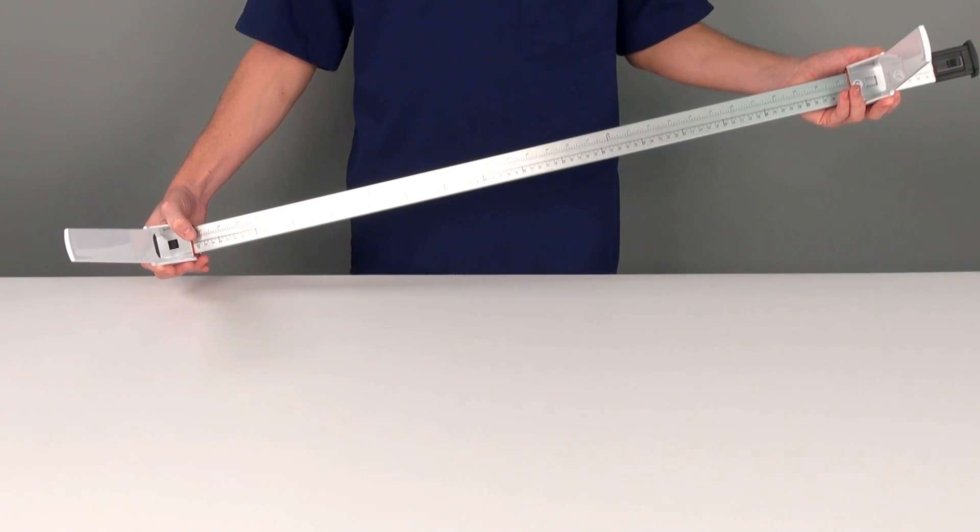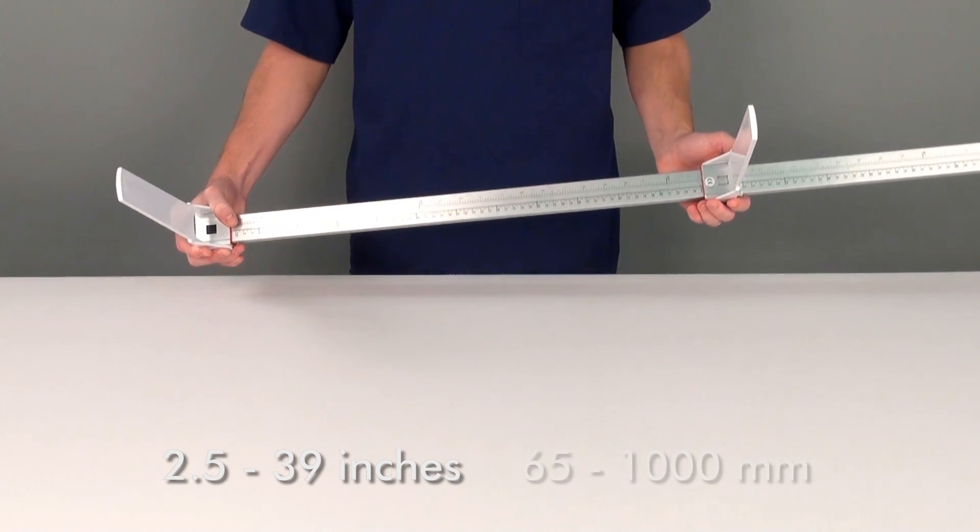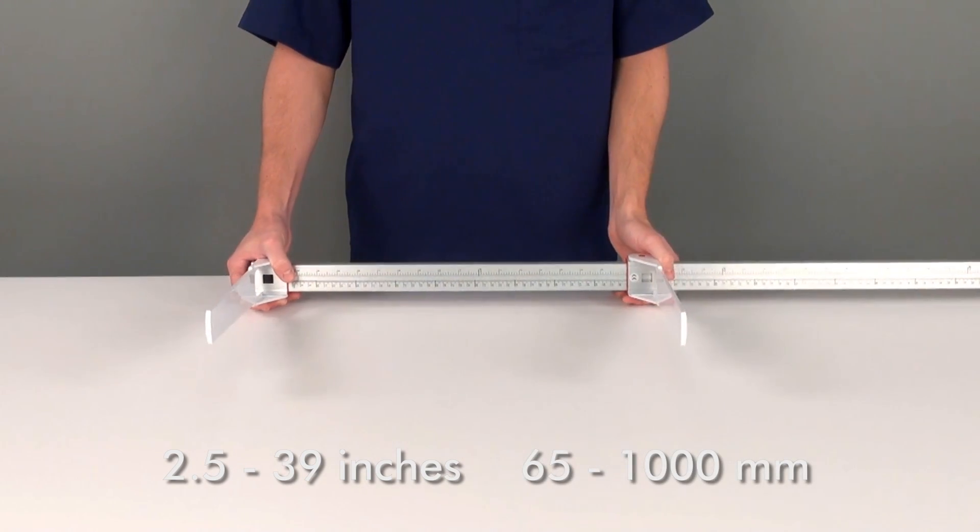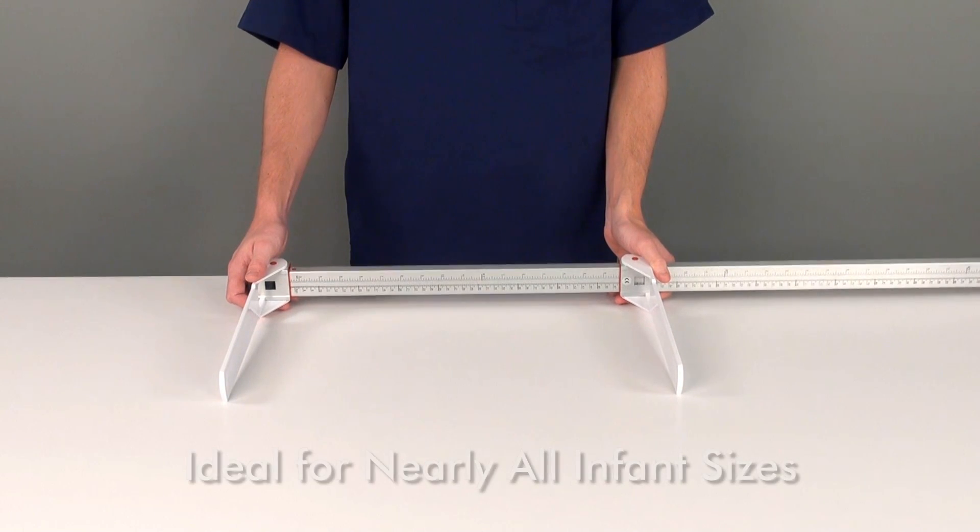The MLM is capable of measuring between 2.5 and 39 inches and 65 to 1000 millimeters with graduation increments of one-eighth inch or one millimeter, which makes it ideal for nearly all sizes of infants.